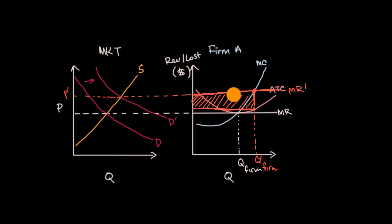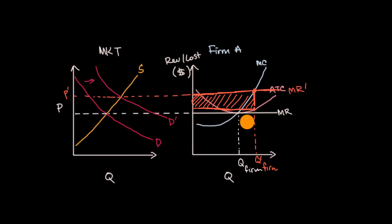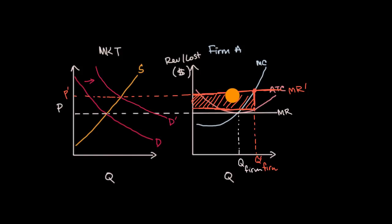As we've said before, when you have positive economic profit and there are no barriers to entry, in the long run more firms will enter to capture that profit. Now let's imagine that because of everyone entering this market, some of the inputs for growing apples start to go up in cost. So we're no longer talking about a constant cost perfectly competitive market — now we're talking about an increasing cost perfectly competitive market.